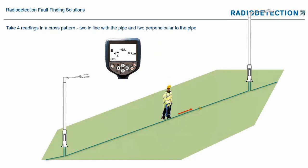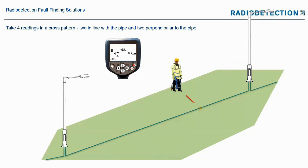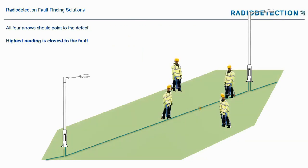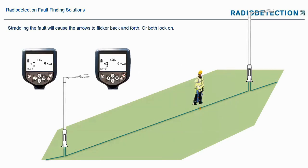Take four readings and that will give you the direct position of your fault. Straddling the fault will cause the arrows to flick back and forth or both to lock on.